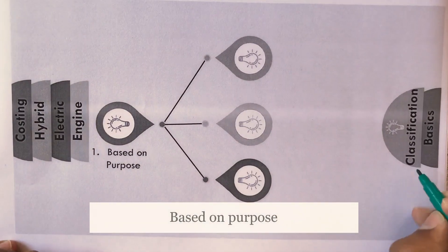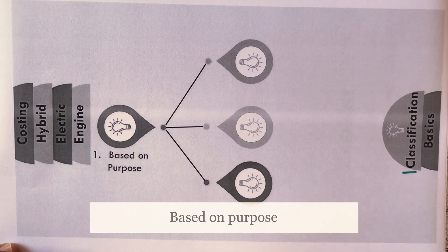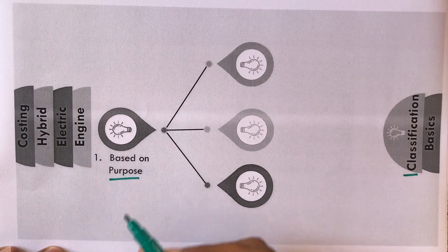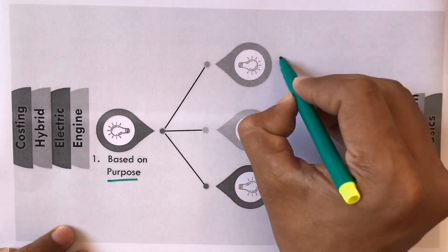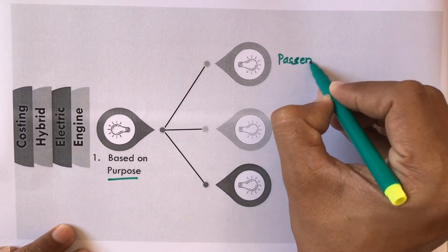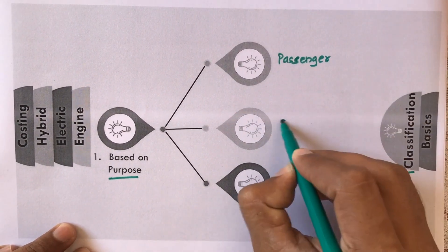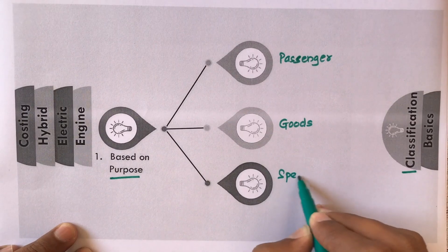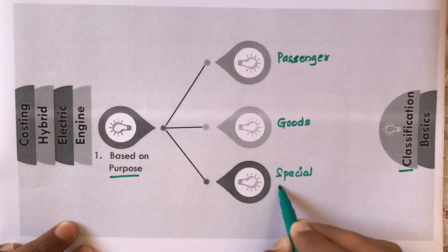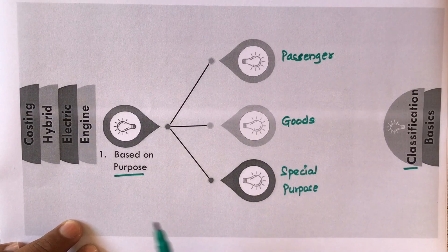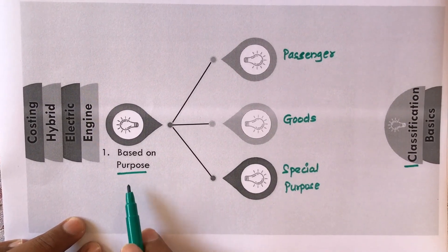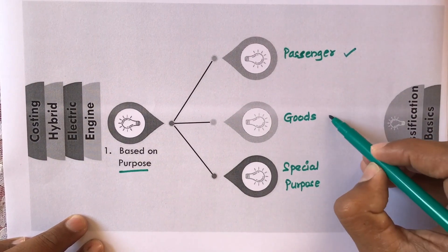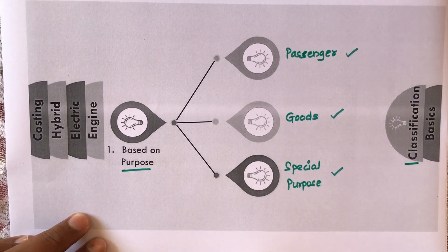Now let us study the classification of automobiles. The first basis of classification is based on the purpose of the vehicle. That may be a passenger vehicle, a goods vehicle, or a special purpose vehicle. Depending upon the purpose, vehicles are classified as passenger vehicles, goods vehicles, or special purpose vehicles.